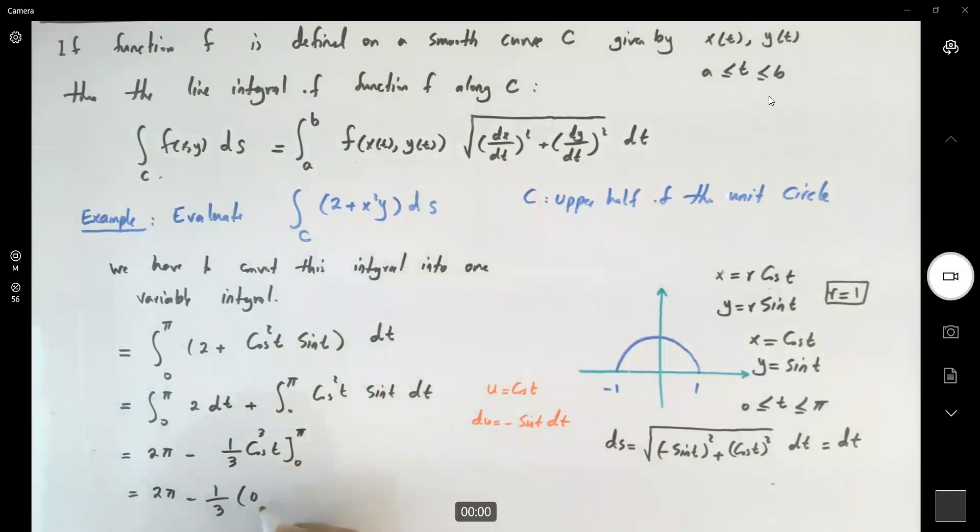And here you have negative 2. So 2 pi plus 2 thirds. It's going to be the final answer here.